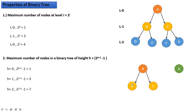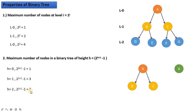For h = 1: 2^(1+1) - 1 = 2^2 - 1 = 4 - 1 = 3. For the next example with h = 2 (two edges): 2^(2+1) - 1 = 2^3 - 1 = 8 - 1 = 7. So the formula 2^(h+1) - 1 correctly gives the maximum number of nodes for a given height.